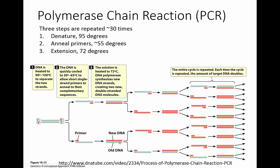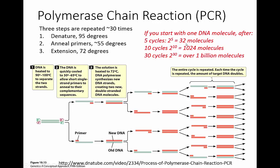The new strand, shown in orange, is double-stranded. After one cycle, instead of one piece of double-stranded DNA, you now have two identical pieces. That is one cycle. In the next cycle, the two strands get separated, primers bind in the annealing step, and DNA polymerase synthesizes new strands in the extension step. After the next step you have four total pieces. After about five cycles you get 32 molecules, and after 30 cycles you get over a billion identical double-stranded DNA molecules.